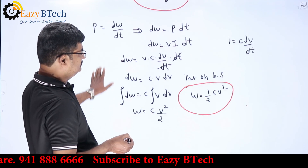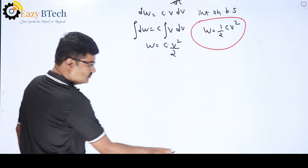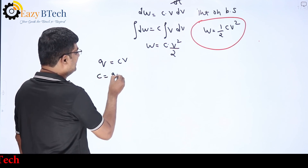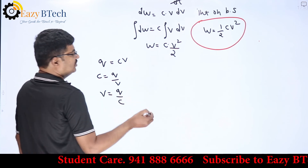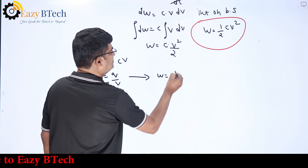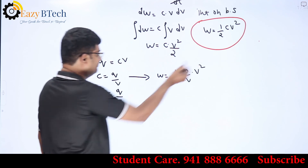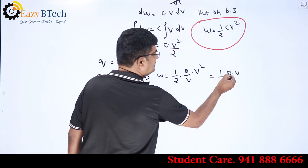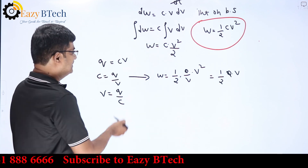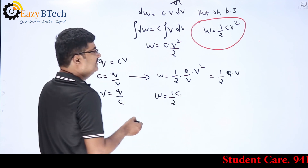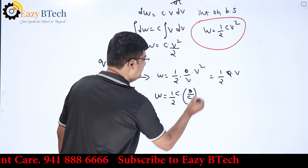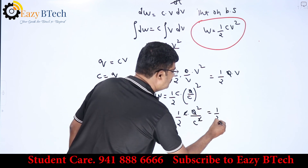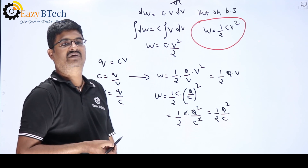Using q = Cv, or v = q/C, or C = q/v, we can write alternative energy expressions. Substituting C = q/v: w = ½·(q/v)·v² = ½qv. Alternatively, substituting v = q/C: w = ½C·(q/C)² = ½C·q²/C² = q²/(2C). So the energy stored in a capacitor can be written as w = ½Cv² = ½qv = q²/(2C).